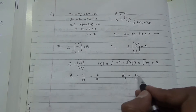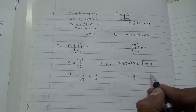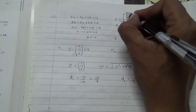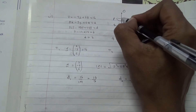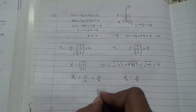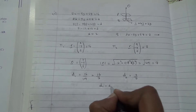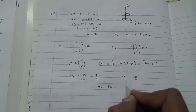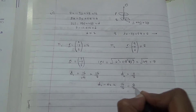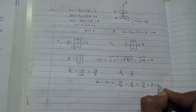Both distances are positive, so the two planes are on the same side of the origin. When planes are on the same side of the origin, we take D1 minus D2. So the distance between the two planes is 16 over 7 minus 2 over 7, which equals 14 over 7, giving us 2 units.